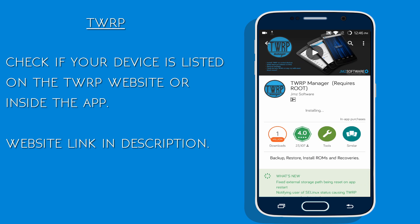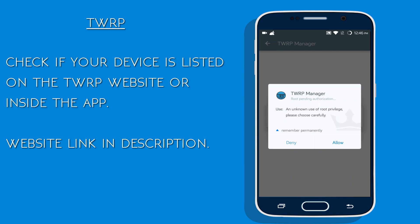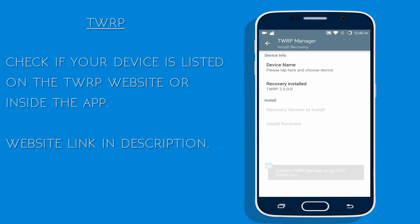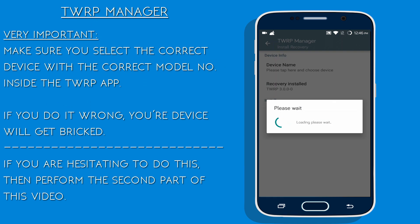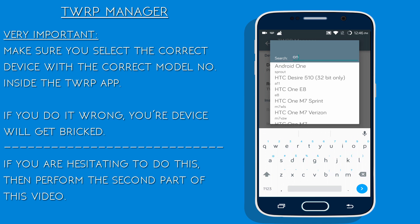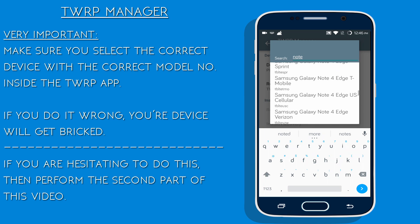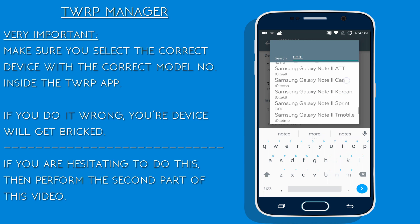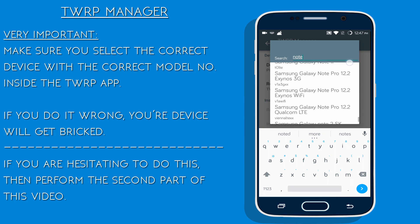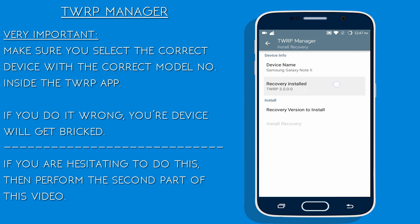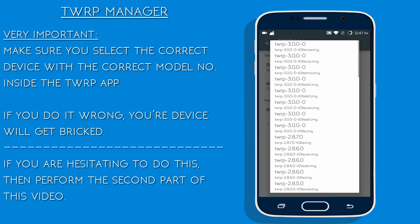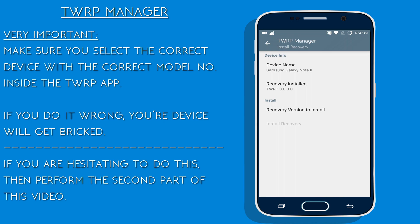Since I already have the recovery installed, I cannot install it again. But when you do it for the first time, a dialog box will pop up asking you to confirm the partition. Just click yes and let it do its work. Once it's done, just power off your device and go into recovery mode and check if it worked or not.